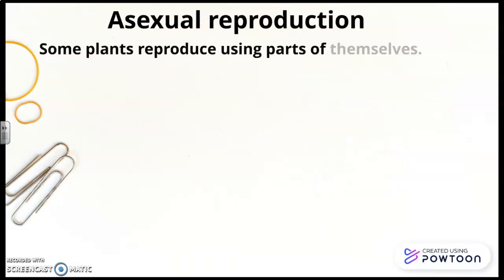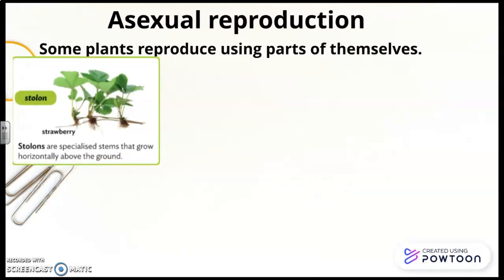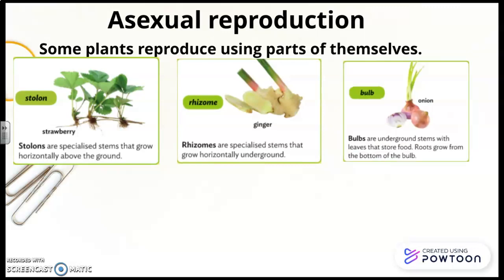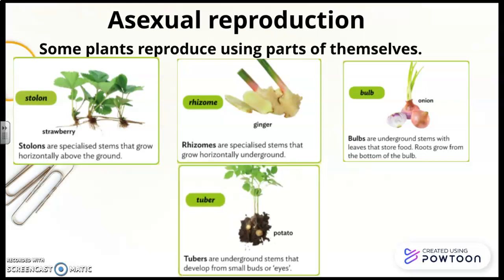Asexual reproduction. Some plants reproduce using parts of their cells. Stolons are specialized stems that grow horizontally above the ground. Rhizomes are specialized stems that grow horizontally underground. Bulbs are underground stems with leaves that store food. Roots grow from the bottom of the bulb. Tubers are underground stems that develop from small buds or eyes.